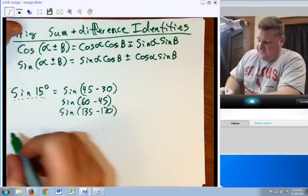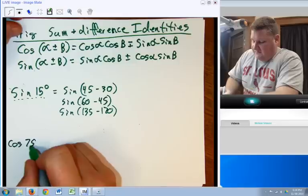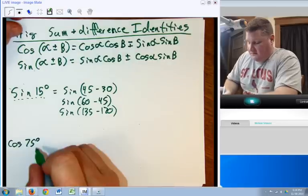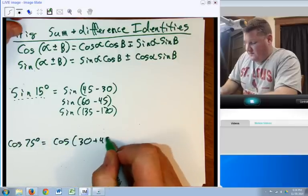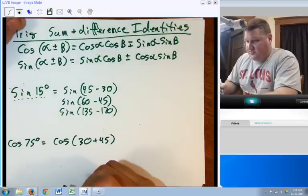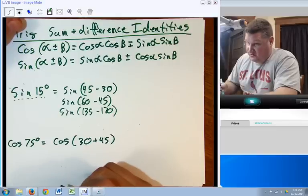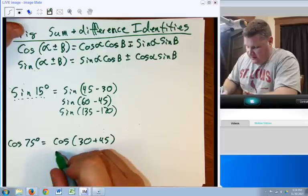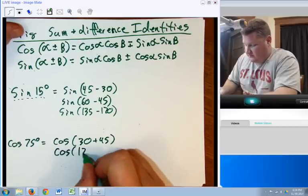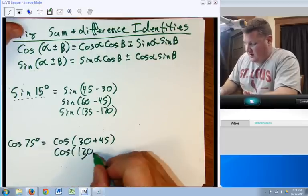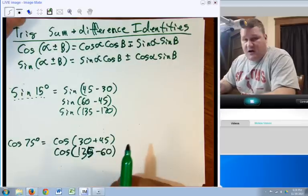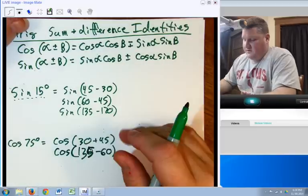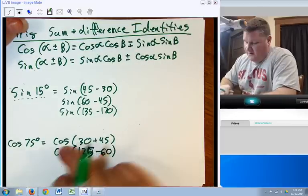For example, if I wanted the cosine of 75 degrees, cosine of 75 degrees could be written as the cosine of 30 plus 45. It could also be 135 minus 60. That would make 75 as well. The idea here is we're coming up with two combos that make whatever it is we're looking for.